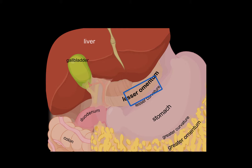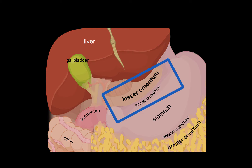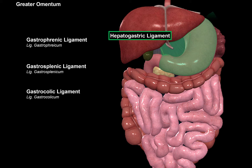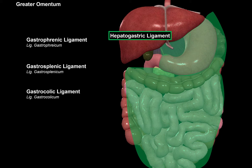All the ligaments above the lesser curvature of the stomach, under the liver, are the lesser omentum. All the ligaments from the greater curvature of the stomach are the greater omentum, which consists of three ligaments. These three ligaments are a continuation of the hepatogastric ligament — it attaches to the lesser curvature, covers the anterior and posterior surface of the stomach, and then continues out from the greater curvature as the greater omentum.